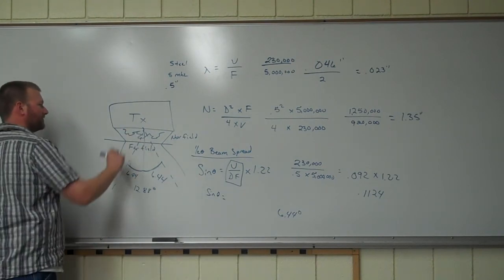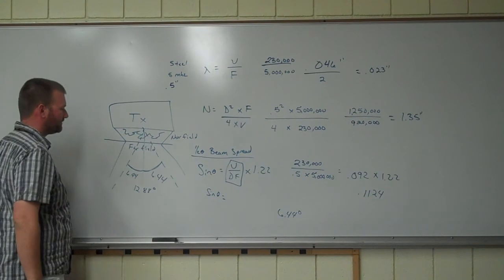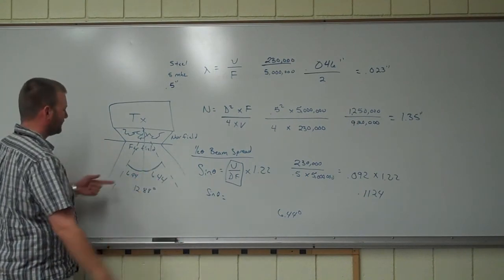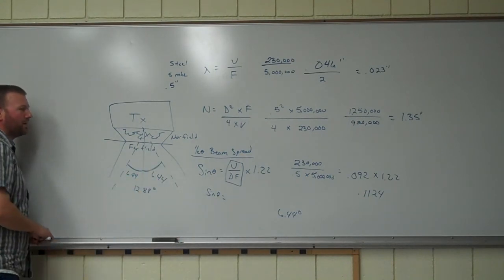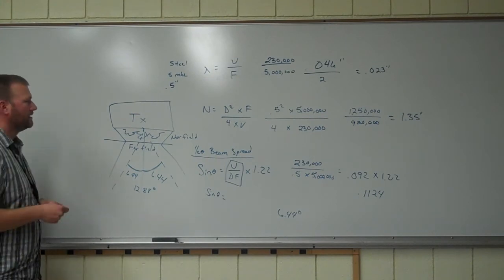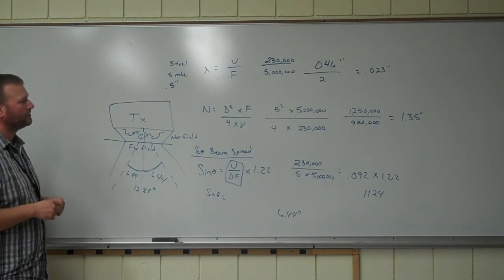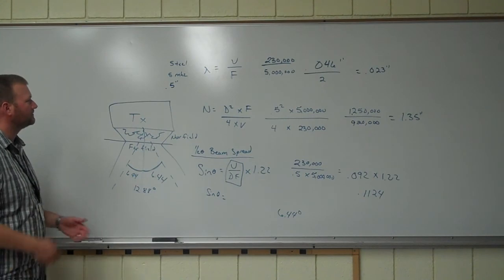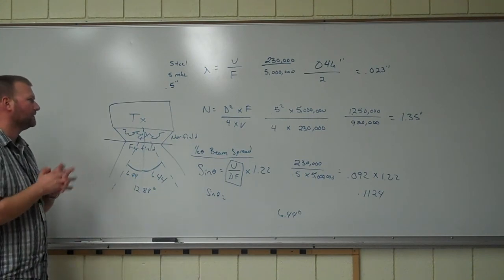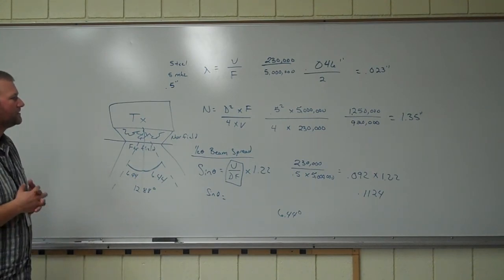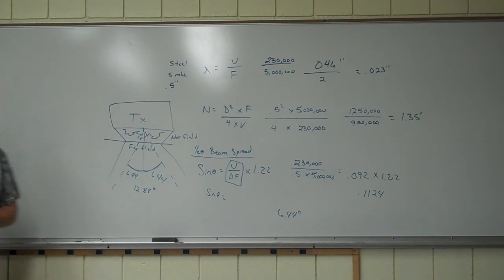So, near field, relatively simple. Far field again, relatively simple. That's just where we can do our inspection. There's our beam spread at 12.8 degrees, almost 12.9. And really, that's all there is to it. That's just how it is. So, wavelength near field beam spread. Relatively simple calculations. It's just plugging in the numbers. Any questions? As always, feel free to email me.